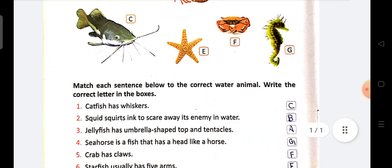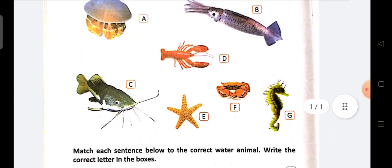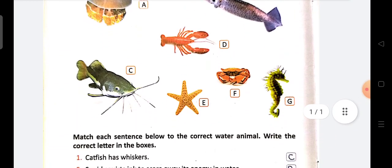Next point number 3. Jellyfish has umbrella-shaped top and tentacles. Jellyfish ka hai hai. It's A. So A. Dekh liji yeh. Jellyfish.